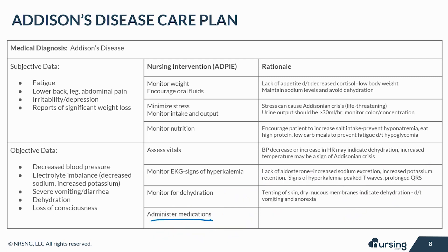As far as medications are concerned, there are a few common ones when treating Addison's disease. K-exalate can be given orally or by enema to reduce potassium levels. Cortef or Cortone and prednisone may be given orally or by IV to increase cortisol levels. Florinef is given orally to promote replacement and retention of sodium and water.